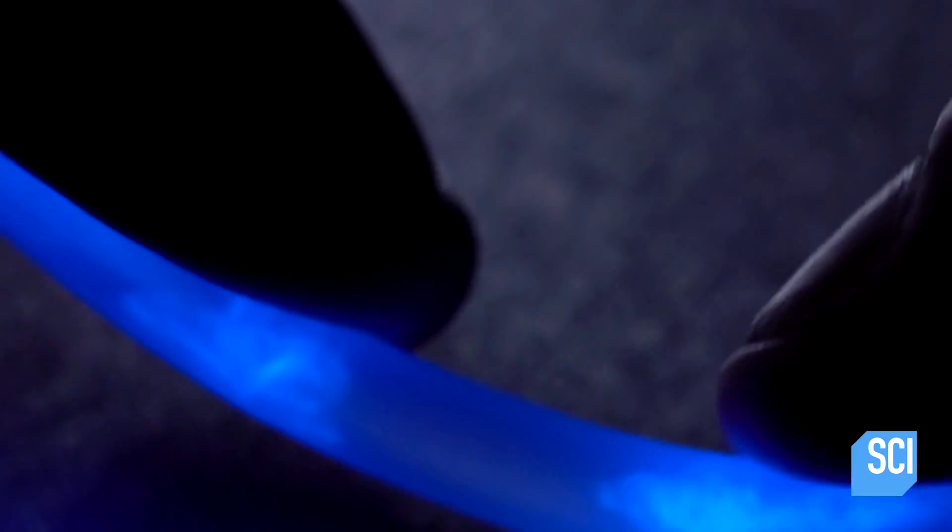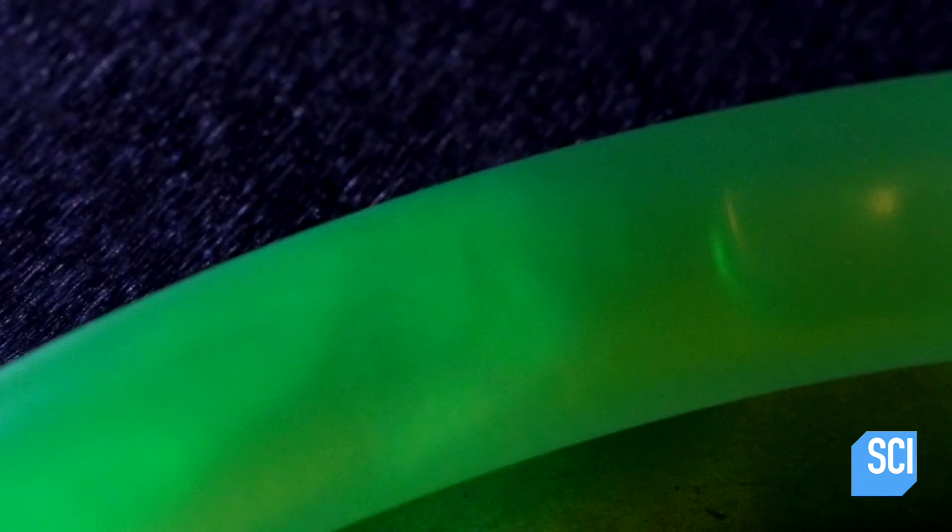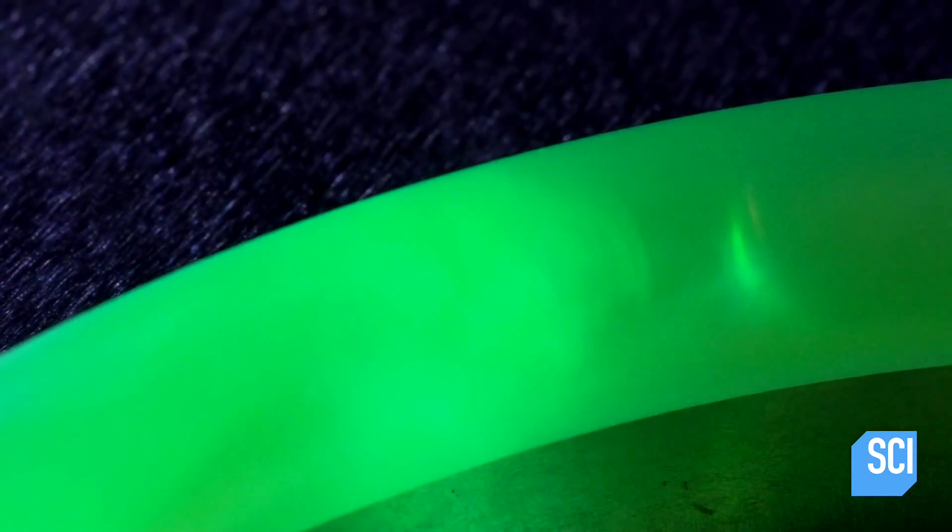Darren grabs some slow motion shots of the glow stick breaking. The footage reveals something kind of fascinating. You can actually see that there is a glass vial inside of the glow stick. When this bends and finally breaks, that's when the chemical reaction starts.